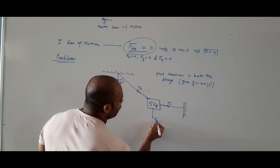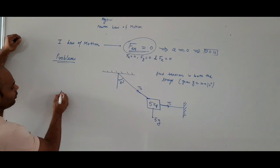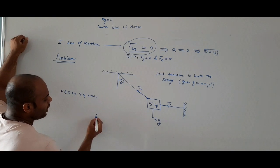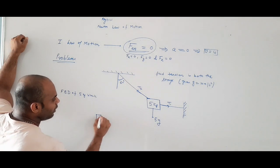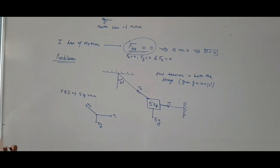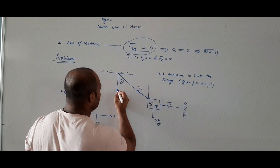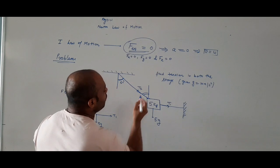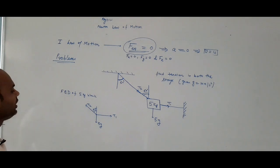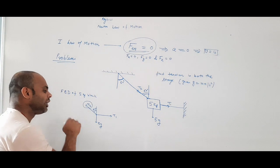The FBD of the 5 kg block: downward is 5g, one side has T1 (vertical string), and the other side has T2 (angled string). This angle is 60 degrees. If I draw the geometry, the alternate angle is also 60 degrees. Now I need to resolve T2 along the x-axis and the y-axis.